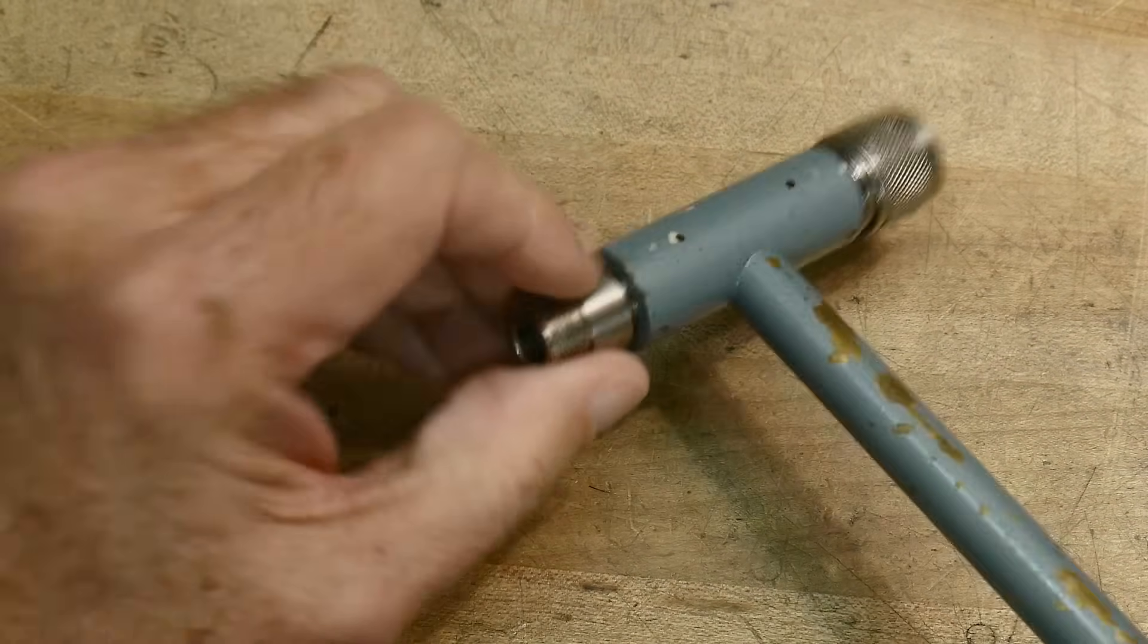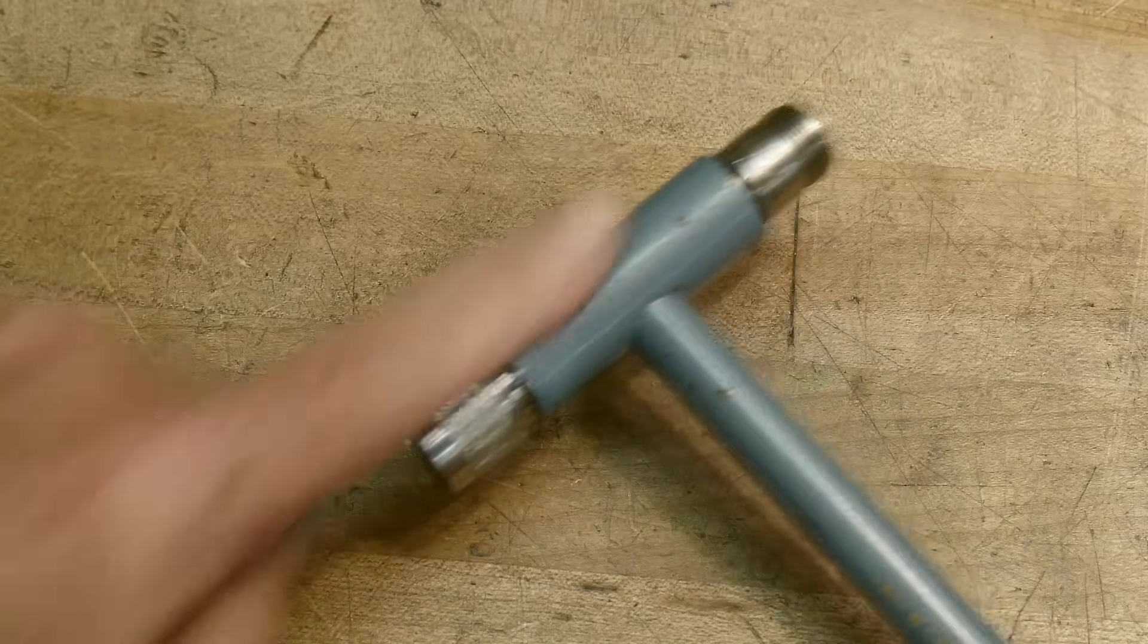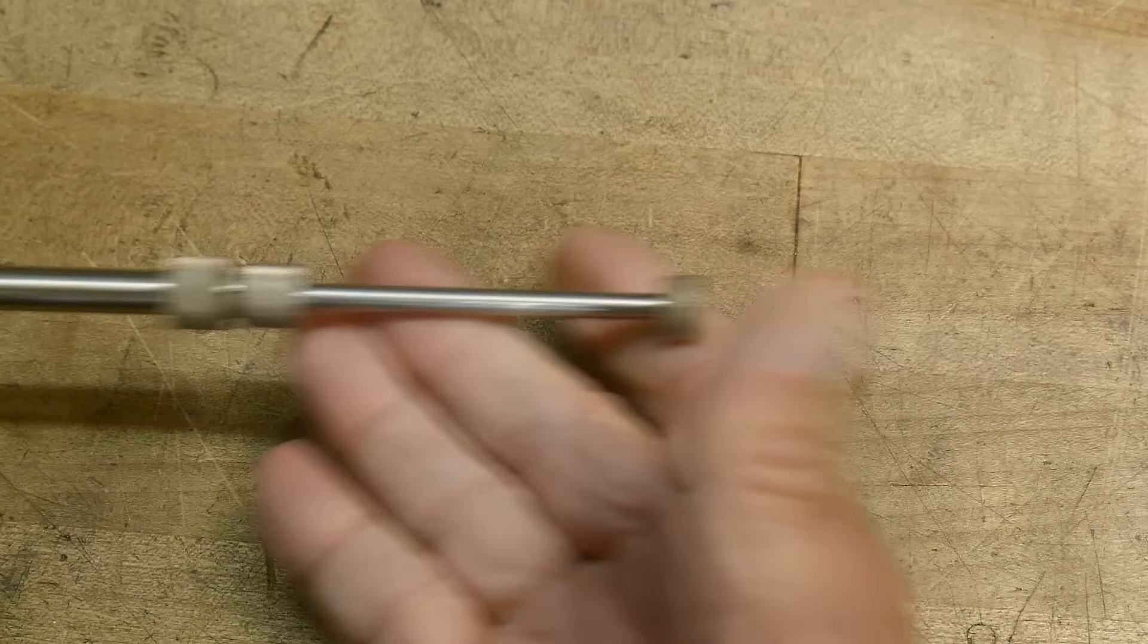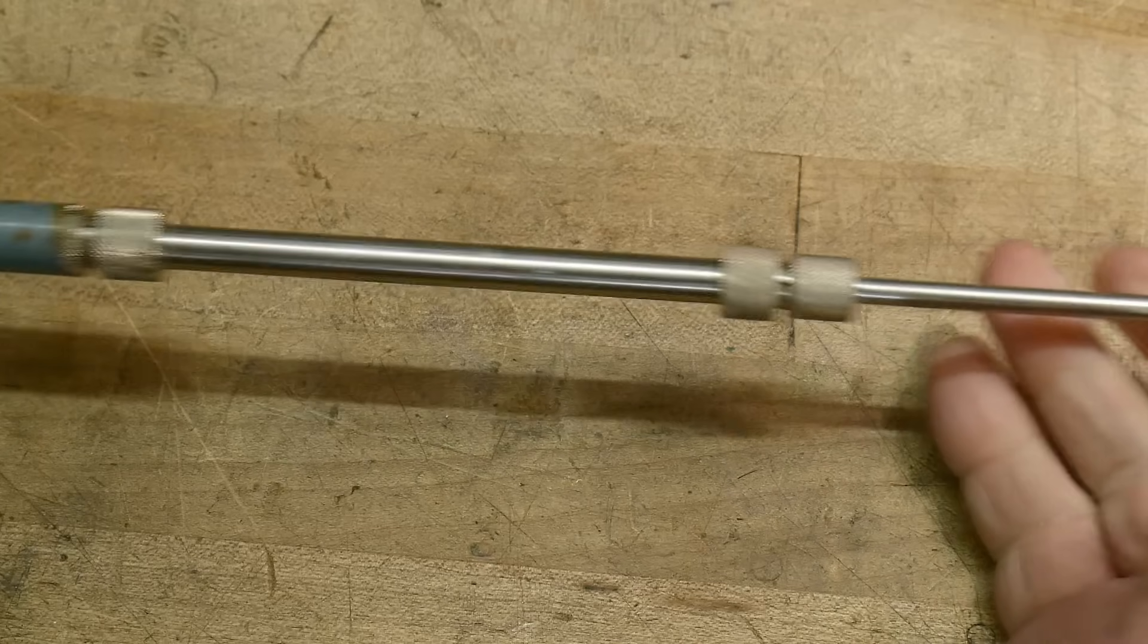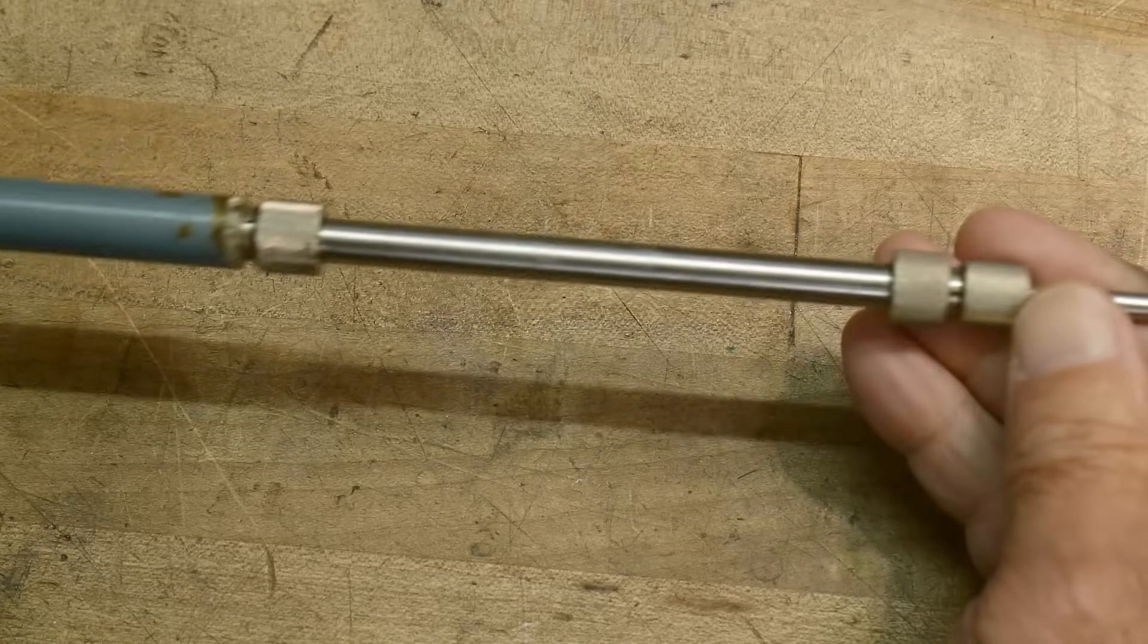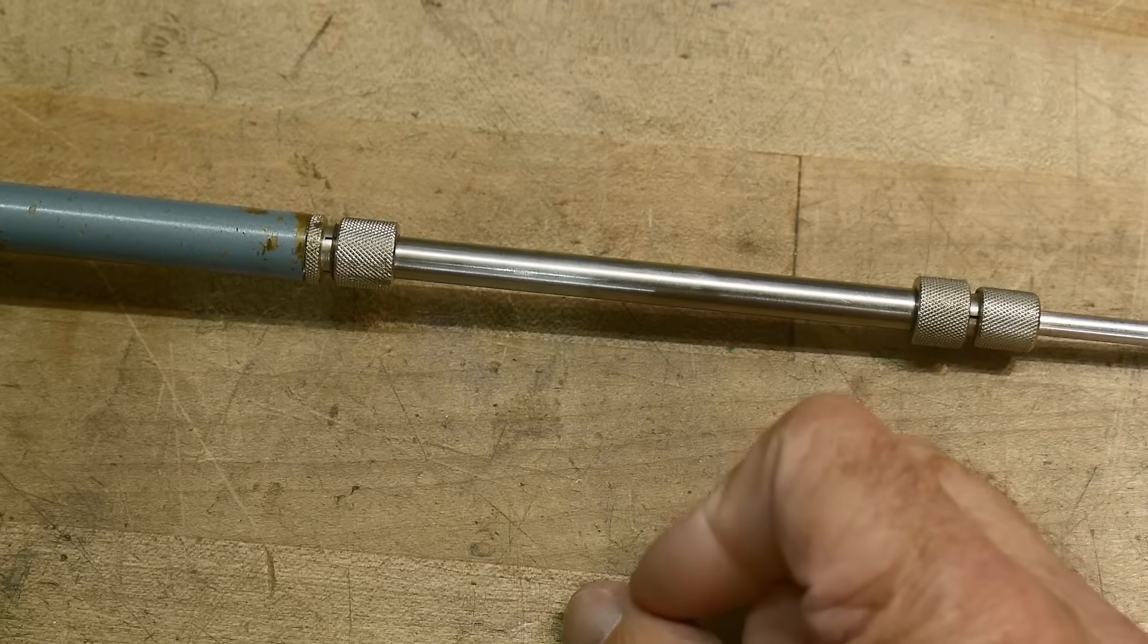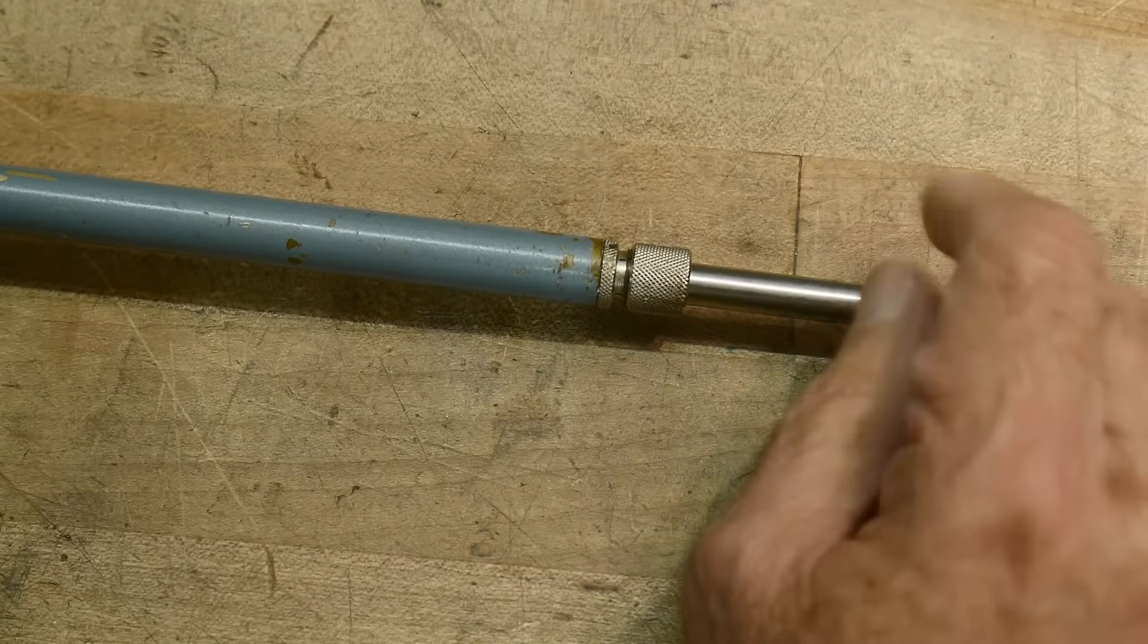So it's got a female and a male N connector on this side, so obviously you're going to send a signal in, and then it's got this long pipe on this end, and these things slide in and out. Now there's something called a trombone, and people will say, oh, that's just a trombone. No, it's not. A trombone is something for a future video.